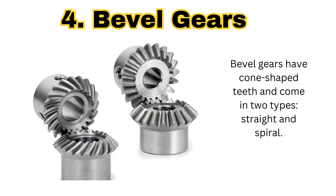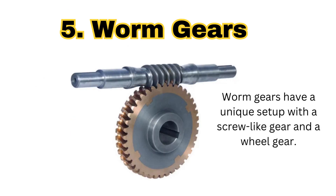The next gear is the bevel gear. The bevel gear comes in a conical shape with teeth, and has two types: the straight bevel gear and the spiral bevel gear. Bevel gears are generally used where we want to transfer power or transfer motion at an angle. A common application is in the vehicle differential.